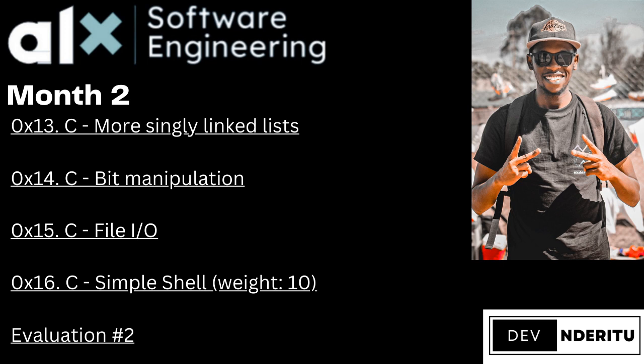With Month 0, Month 1, and Month 2 complete, you close out the first sprint. Simple Shell is the project that closes out Sprint 1. In the next video I'll be talking about Sprint 2 and what to expect, so stay tuned.